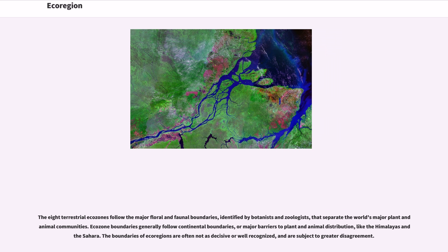The eight terrestrial ecozones follow the major floral and faunal boundaries identified by botanists and zoologists that separate the world's major plant and animal communities. Ecozone boundaries generally follow continental boundaries, or major barriers to plant and animal distribution, like the Himalayas and the Sahara. The boundaries of ecoregions are often not as decisive or well-recognized and are subject to greater disagreement.